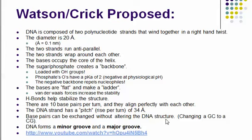The diameter of DNA is 20 angstroms. One angstrom is 0.1 nanometers — that's 0.1 times 10 to the negative ninth meters, so super, super tiny. But it's still a molecule we can see with our naked eye because of its length.